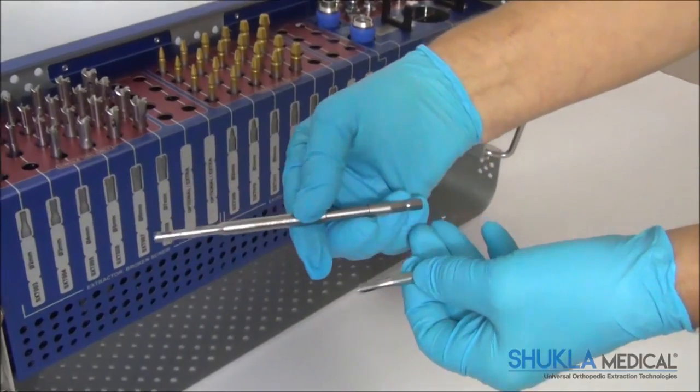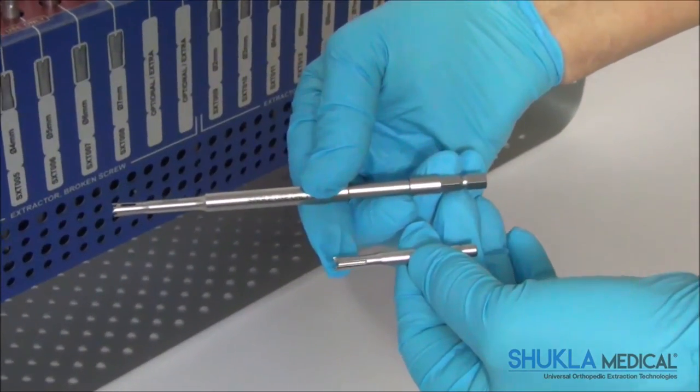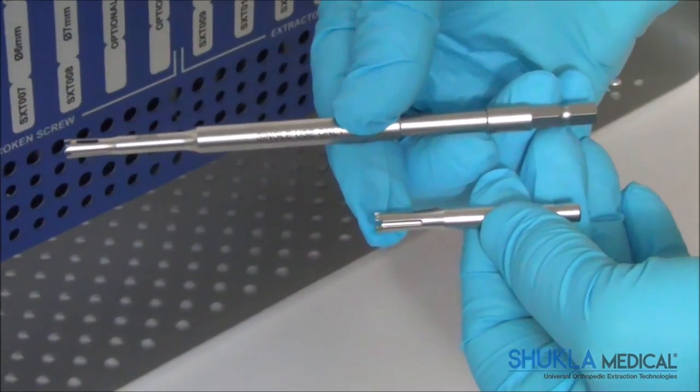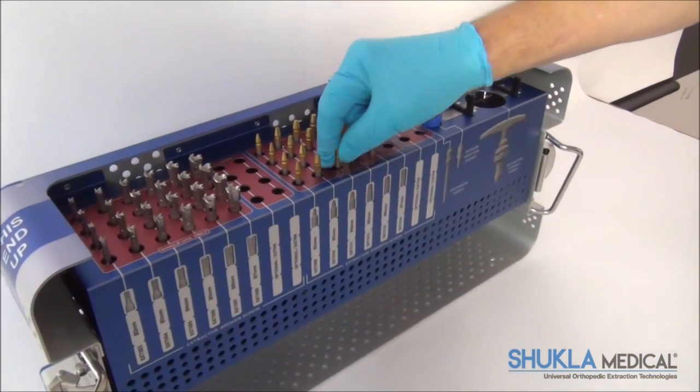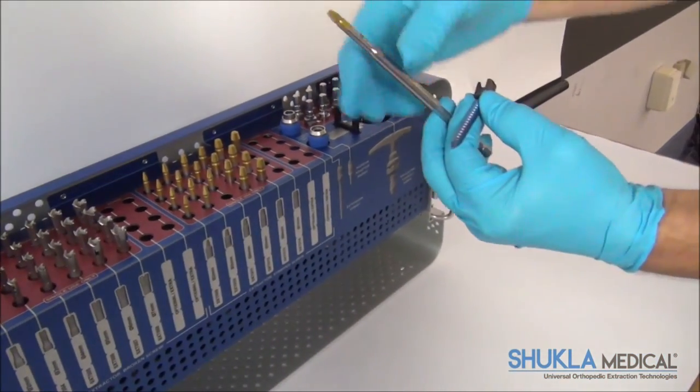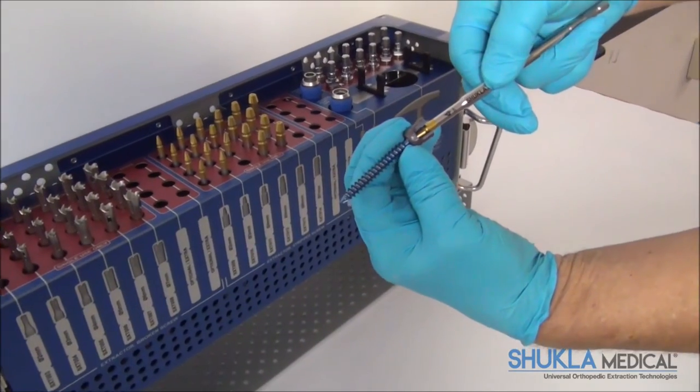For better visibility, the extractors are 10cm longer than the current extractor screw extractors. The stripped screw extractor tips are more narrow to allow the surgeon to gain access in between the saddles of the pedicle screws.